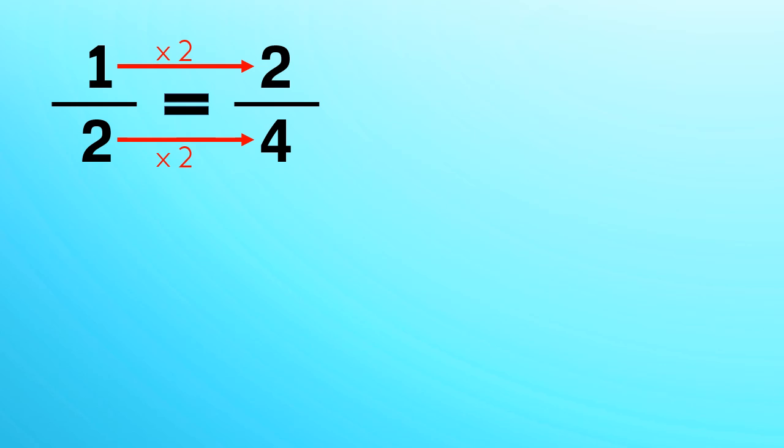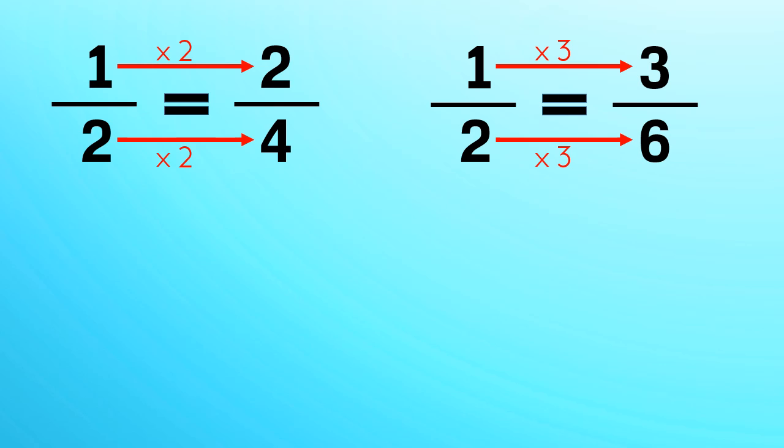Now let's take another example. We have 1 by 2. If we multiply both numerator and denominator by 3 we get 3 by 6. So the value of 3 by 6 is equal to value of 1 by 2.